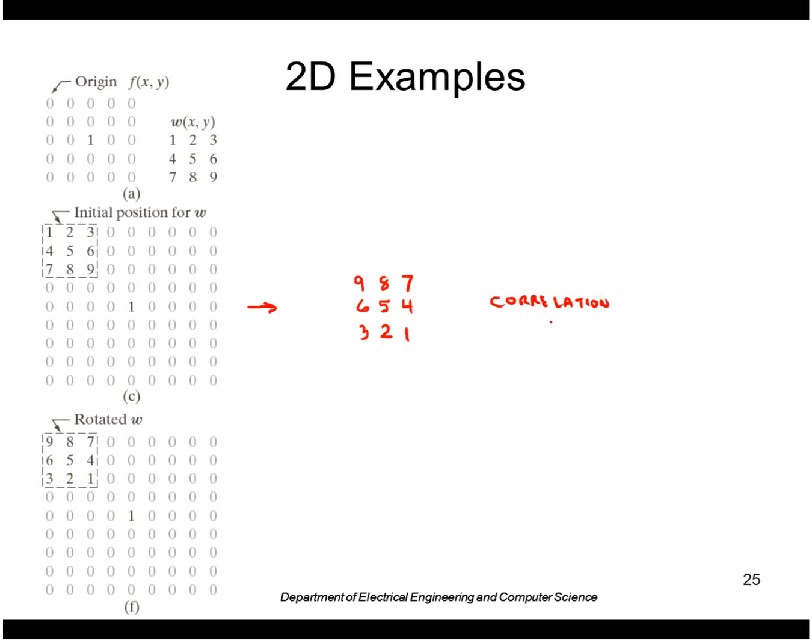For convolution, we flip the mask about both axes, then correlate, and we get the original mask back exactly. That's what we get when we correlate or convolve a mask with an impulse.